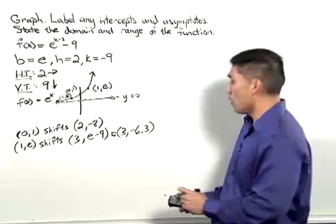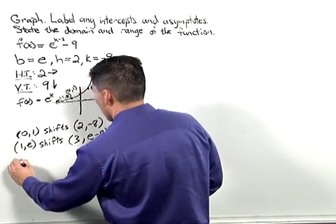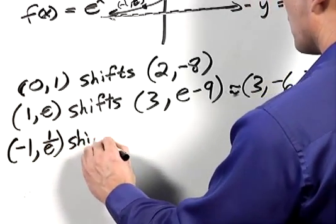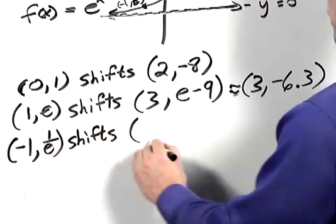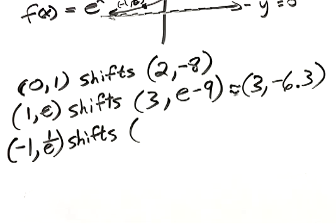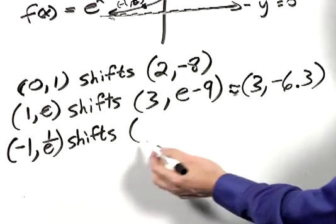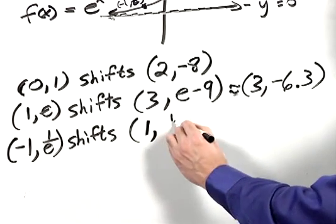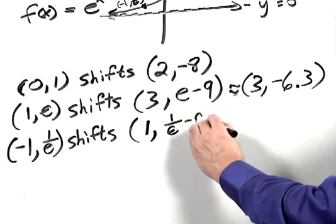Let's shift the last point. The last point here is negative 1 comma 1 over e. When we shift that 2 to the right and 9 down, the x-coordinate moving 2 to the right is 1, and 9 down would be 1 over e minus 9.